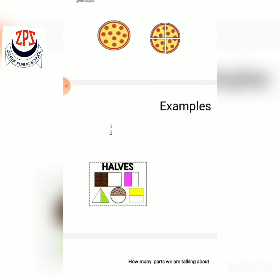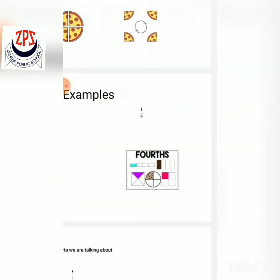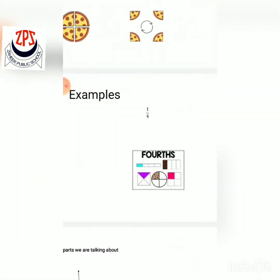A square divided into two equal parts — one part is yellow and the total parts are two — you write one upon two. Now for quarter examples, also called fourth, written as one upon four.